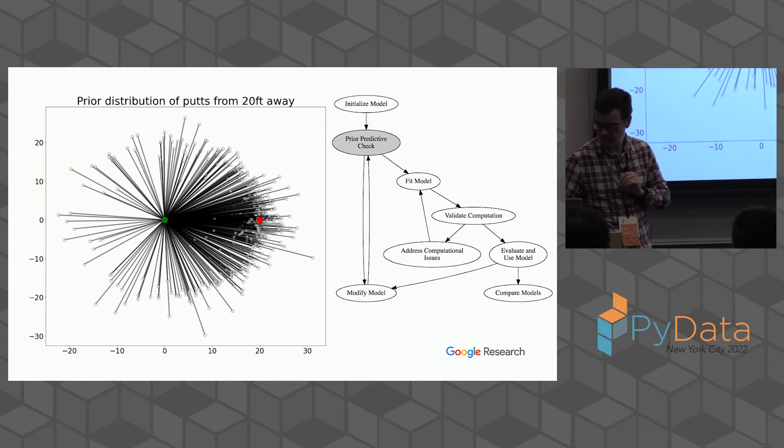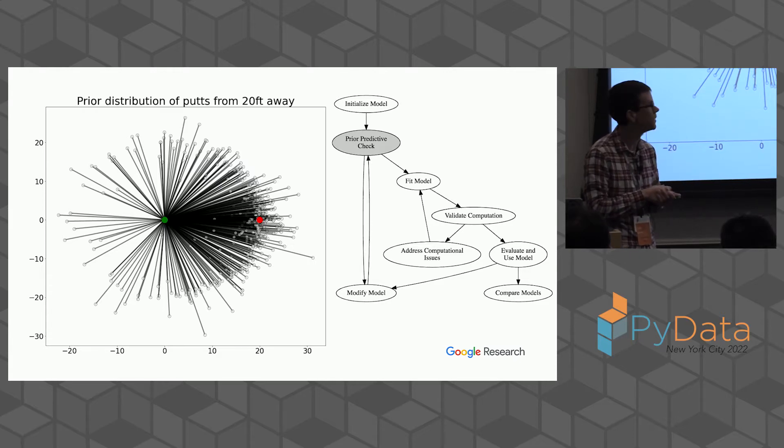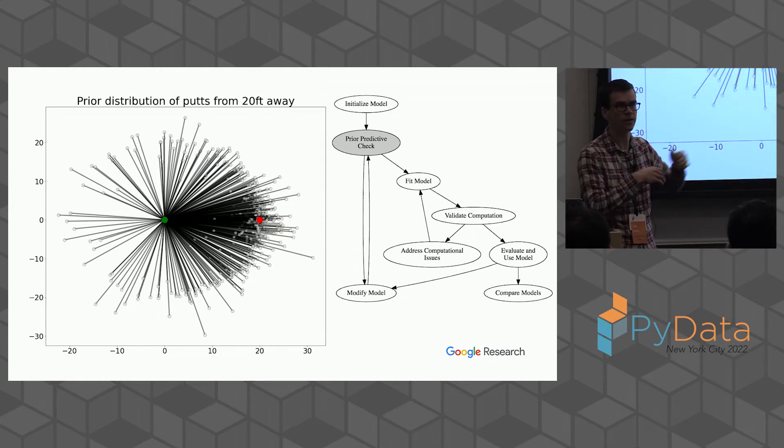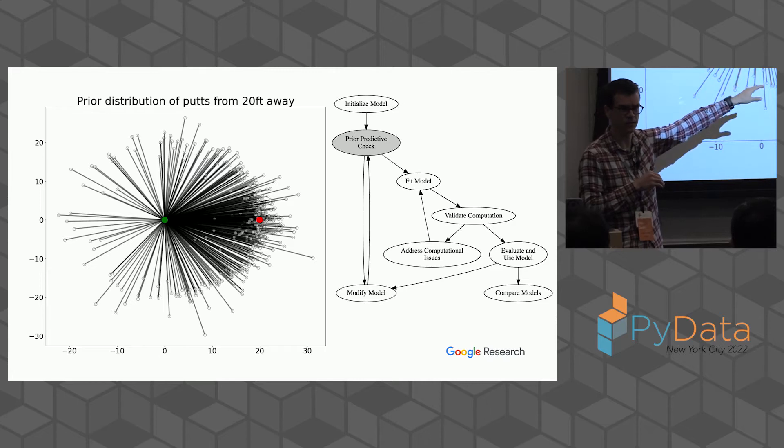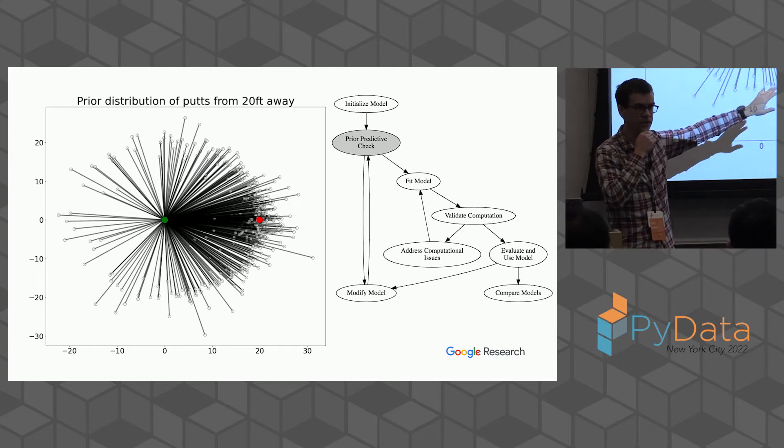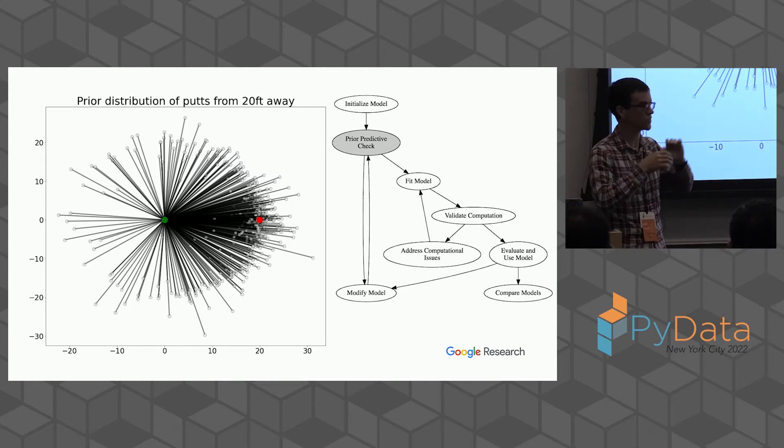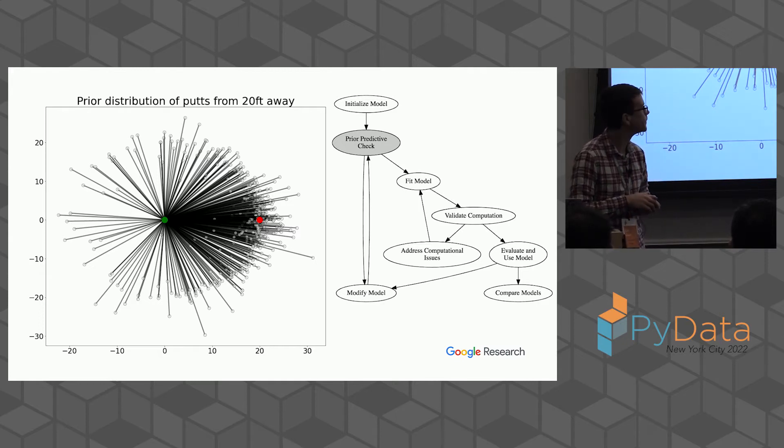Here's another diagnostic and we can keep on going like this. One thing about our previous model was that we assumed that professional golfers might not be able to aim the ball in the correct direction, but they would hit it the exact right distance every time. One other way to change it is to say they hit it about the right distance, but there's some normal error on how far they hit it. If we again draw from our prior predictive check, we'll get this. This is actually the model that in the case study that Gelman wrote, he ends up on.